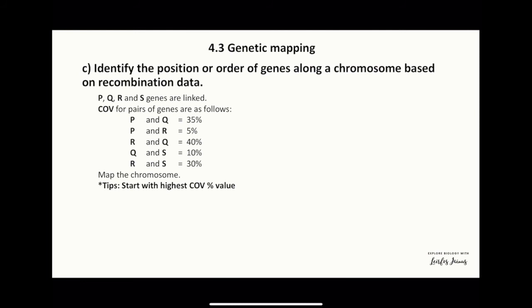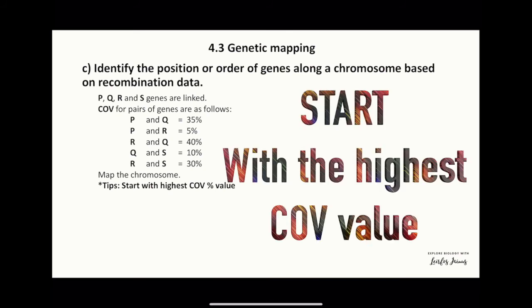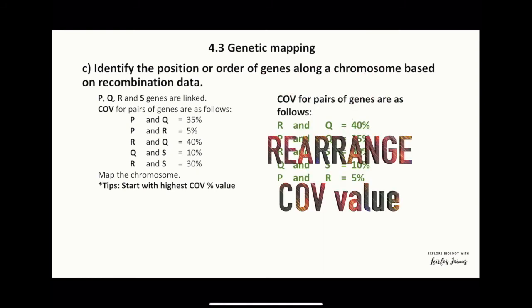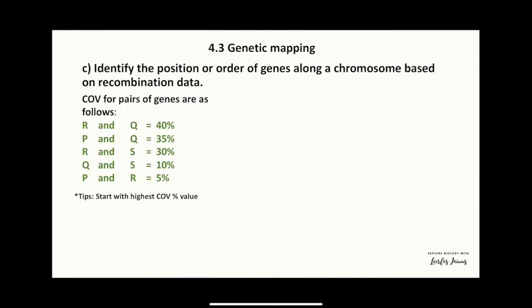Genetic mapping can also be used to identify the position or order of genes along a chromosome based on recombination data. For example, genes P, Q, R, and H are linked — map the chromosome. We start with the highest COV value and rearrange data from highest to lowest. First, R and Q: 40 map units. Second, P and Q: 35 map units, meaning P is situated between R and Q.